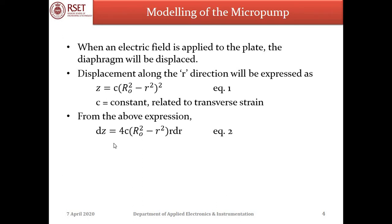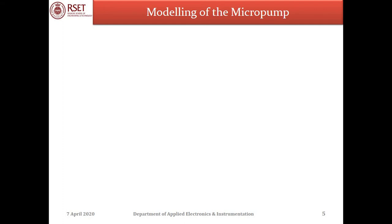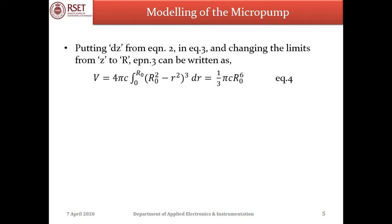From the above expression, we can derive the derivative of Z: dZ = 4C(R0² − R²) · R · dR. The change in volume within the pump chamber is given by V = ∫₀^Z₀ πR² dZ, where Z0 is the displacement at the center. Substituting dZ from equation 2 into equation 3 and changing the limits from Z to R, equation 3 is rewritten as V = 4πC ∫₀^R₀ (R0² − R²)³ dR, which equates to (1/3)πC·R0⁶.